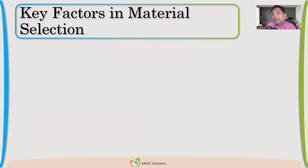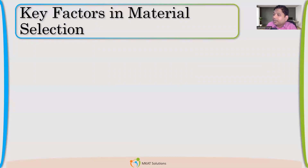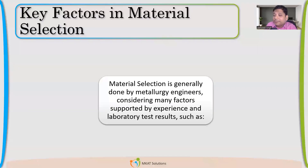Now, if either the client or client-designated engineer is doing the selection of material, what are the factors involved? Can you point out some factors which may influence the selection of material? Whether a metallurgy engineer, material engineer, or client-designated engineer is doing it.